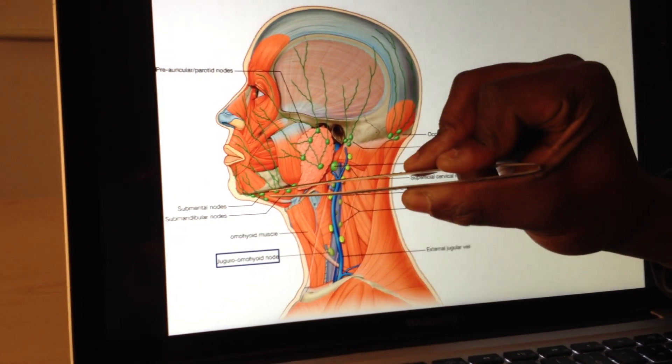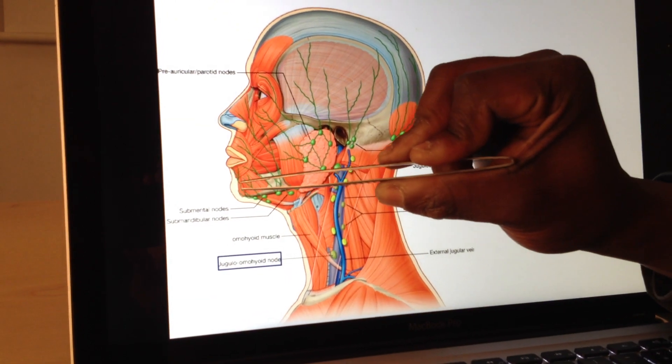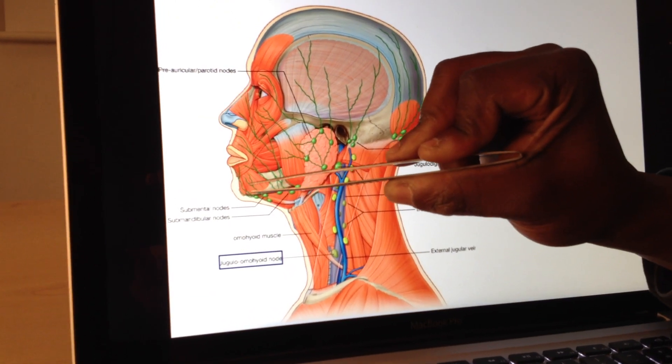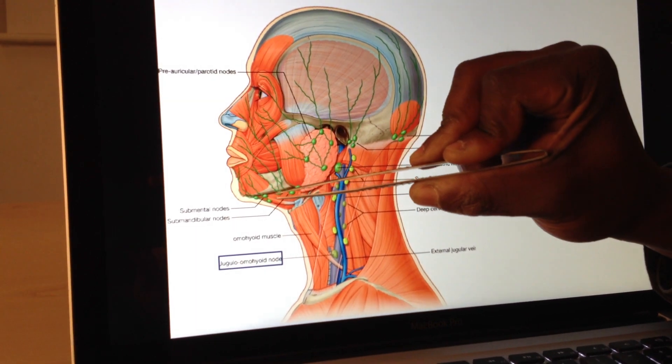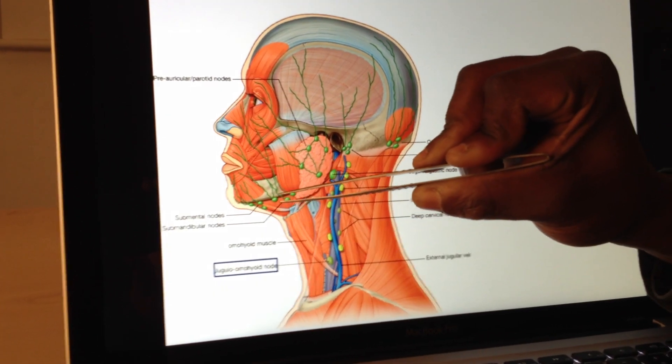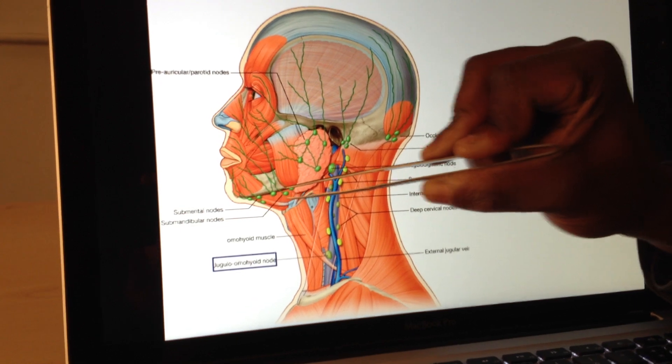So you'd start off at your submental nodes. Remember this area here, mental, go around chinning people after you've had a rough night out. Then we'll move around here to this area underneath the mandible, submandibular nodes.